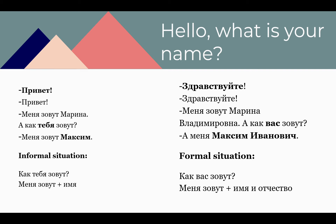And here is her question: А как тебя зовут? — Тебя зовут. Try to guess the translation: А как тебя зовут? — And what is your name? The answer: Меня зовут Максим — My name is Maksim. This dialogue we use in informal situations.